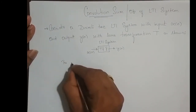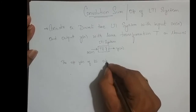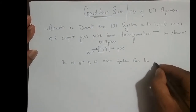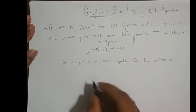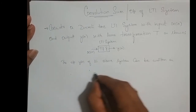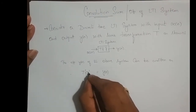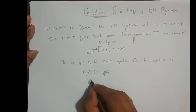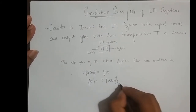The output Y[n] of the above system can be written as: Y[n] is equal to the transformation of the input X[n]. That is, Y[n] = T{X[n]}.